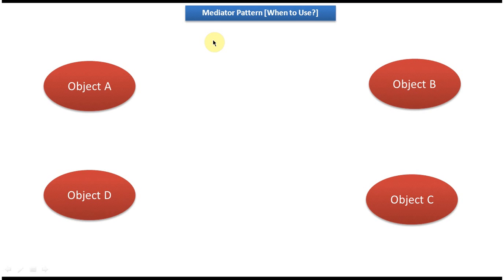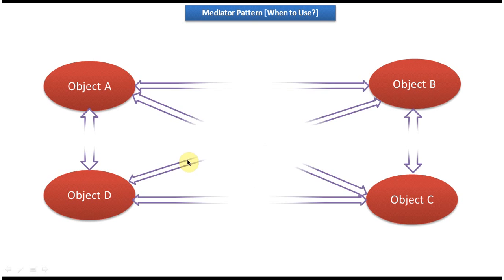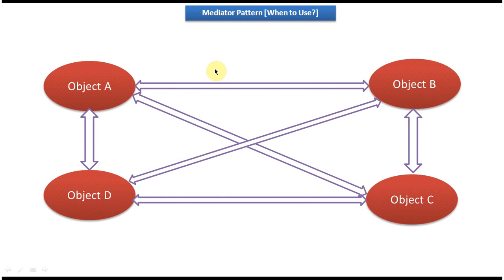Here you can see four objects: Object A, Object B, Object C, and Object D. Suppose these four objects want to communicate with each other. The way we used to do it is each object would directly call another object. For example, if Object A wants to communicate with Object B, then Object A needs to know the reference of Object B.